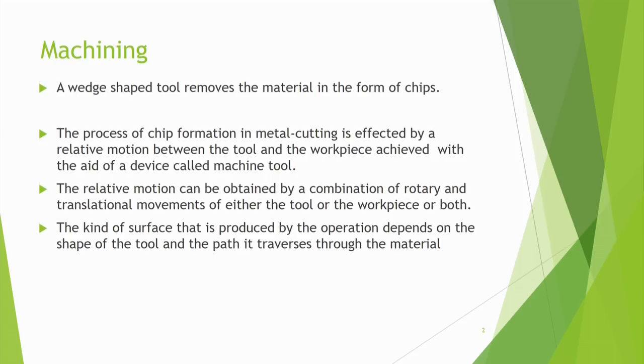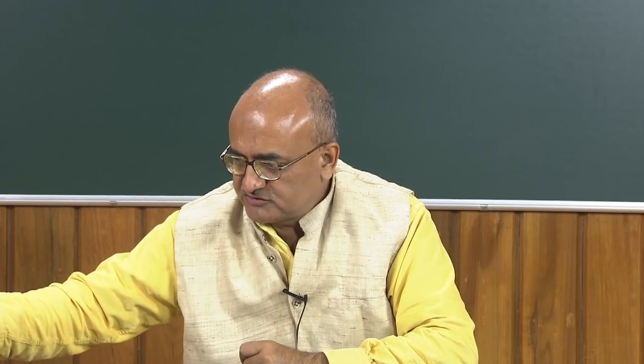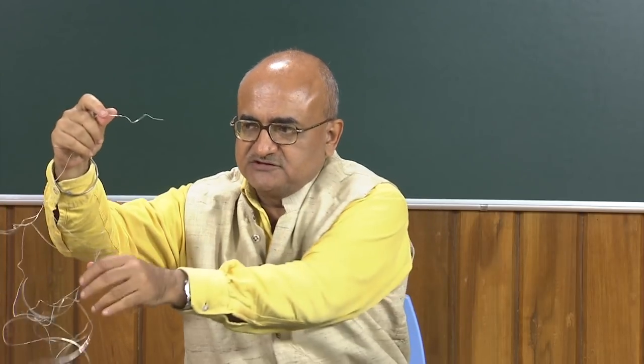Machining means there is a wedge-shape tool that removes the material in the form of chips. There is a tool which is wedge-shape — you can see there is a clear cut wedge, this is the cutting edge, and there are two surfaces which are meeting at the cutting edge. So it is a wedge-shape tool. Machining basically involves the removal of the material in the form of chips. Chips are like material pieces.